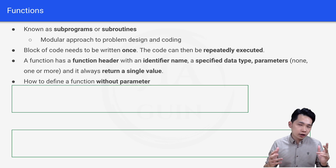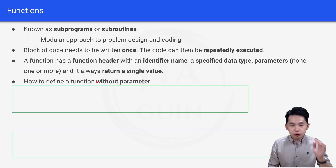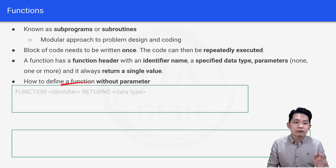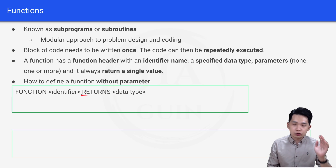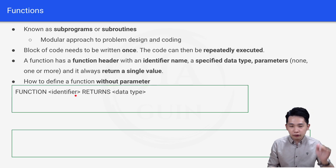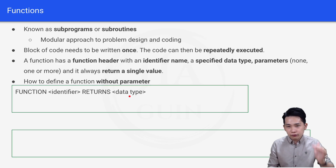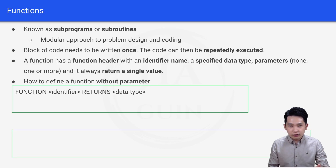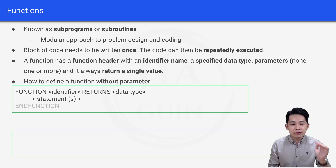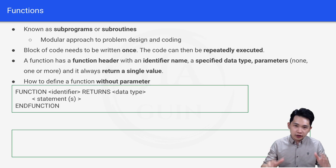To define a function without a parameter, we write: FUNCTION identifier RETURNS data type — where identifier is the name of the function and data type is the type of data you will return from the function. Next, within the function we write the statement, and finally END FUNCTION.